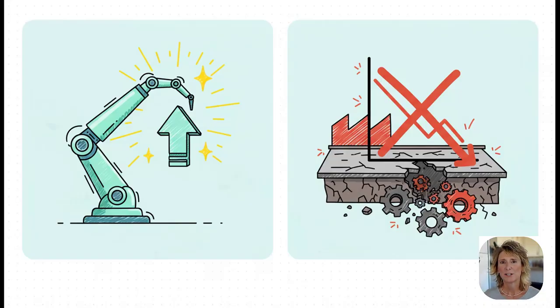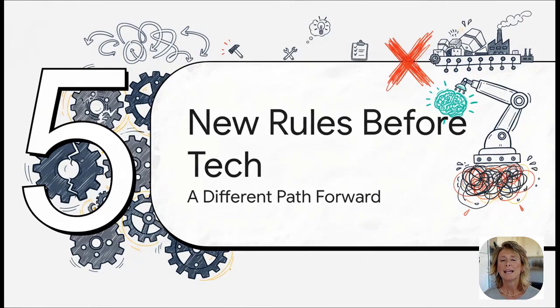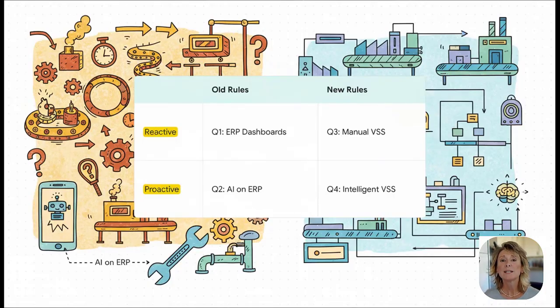So where do we go from here? If just slapping AI on top of the old system is a dead end, what's the alternative? Well, it means we need a totally different way of thinking. It's about focusing on getting the rules right before you even think about adding the tech.